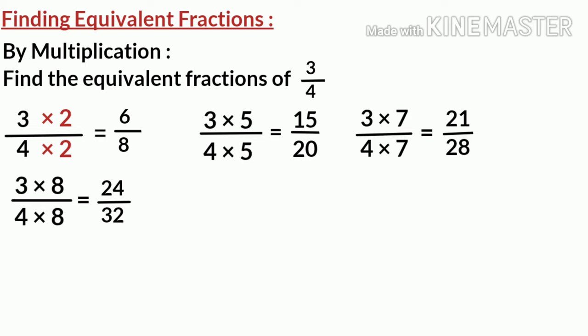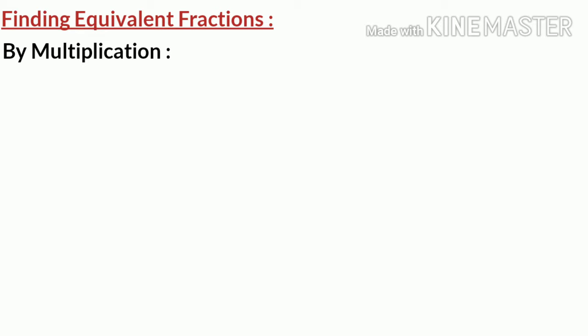We can multiply the fraction by any number to get its equivalent fractions, but we must multiply both the numerator and the denominator by the same number. Now look at this question: suppose we have to find the missing number in a given pair of equivalent fractions.